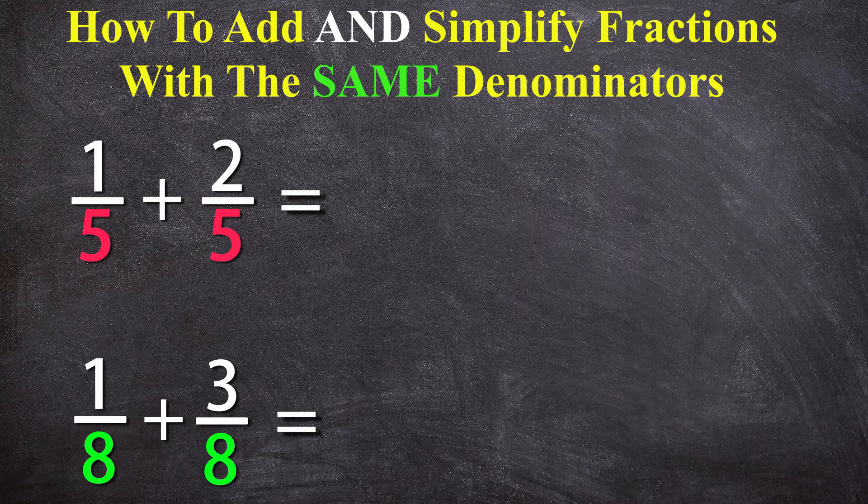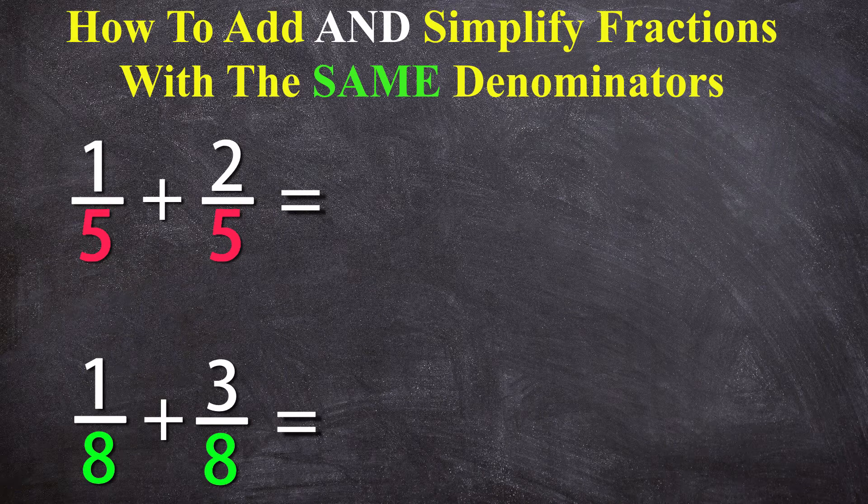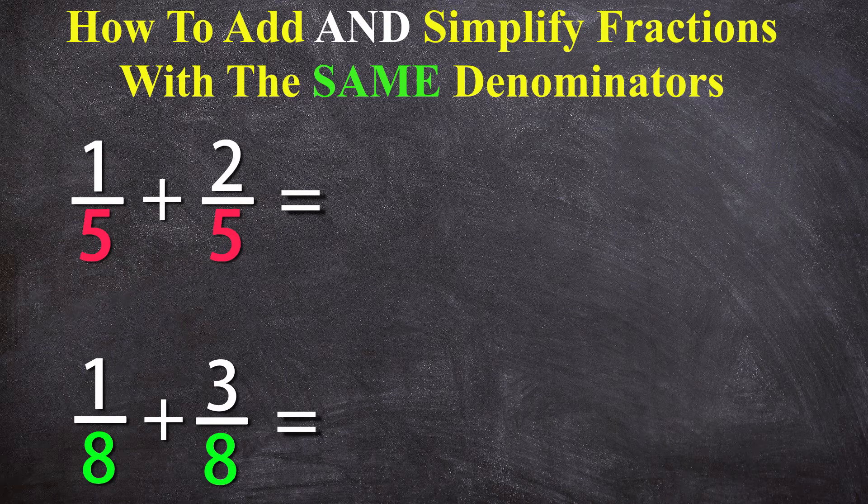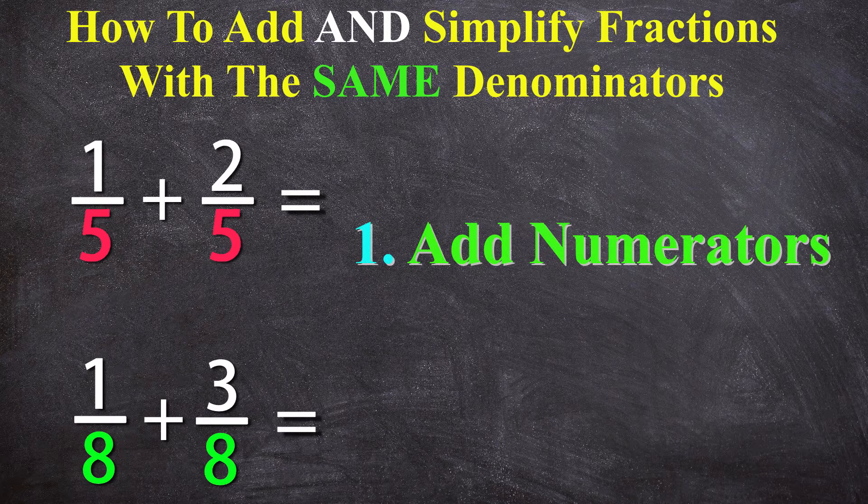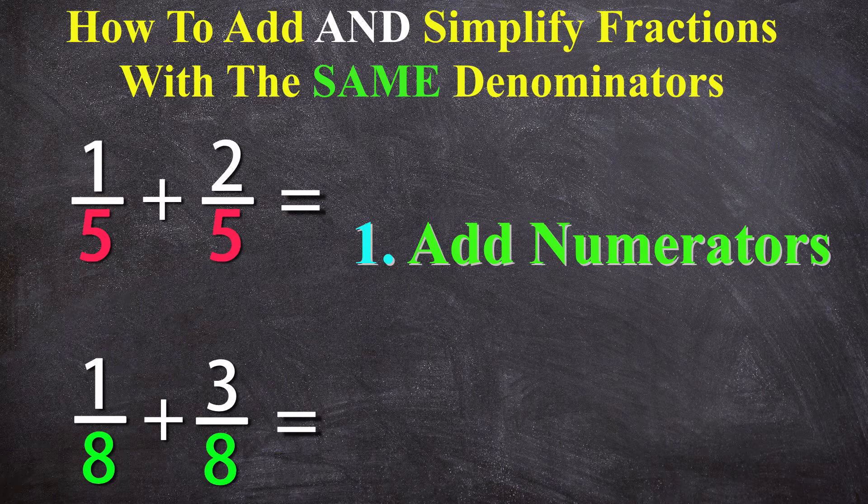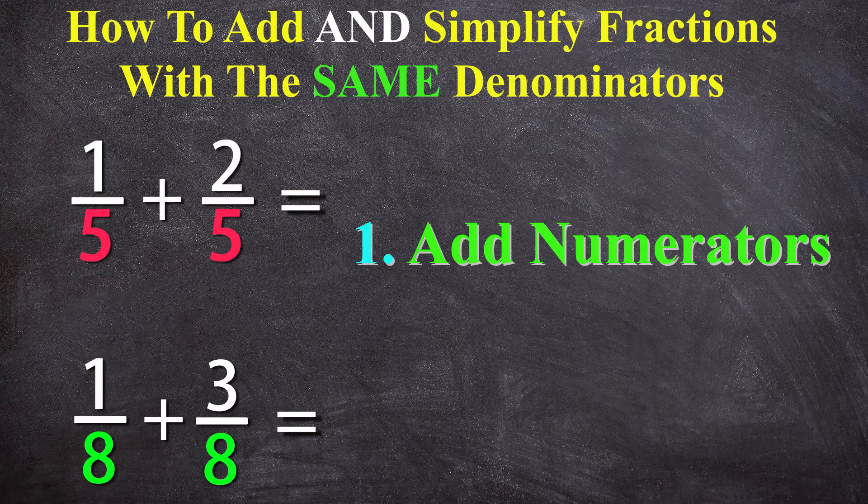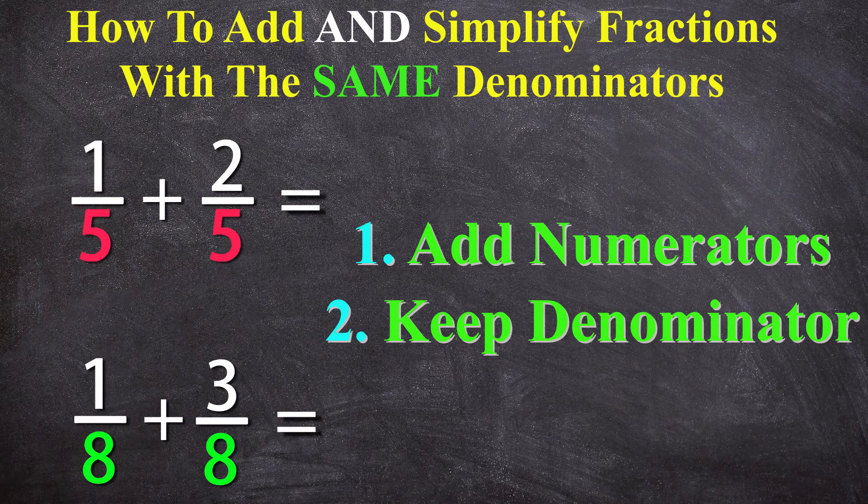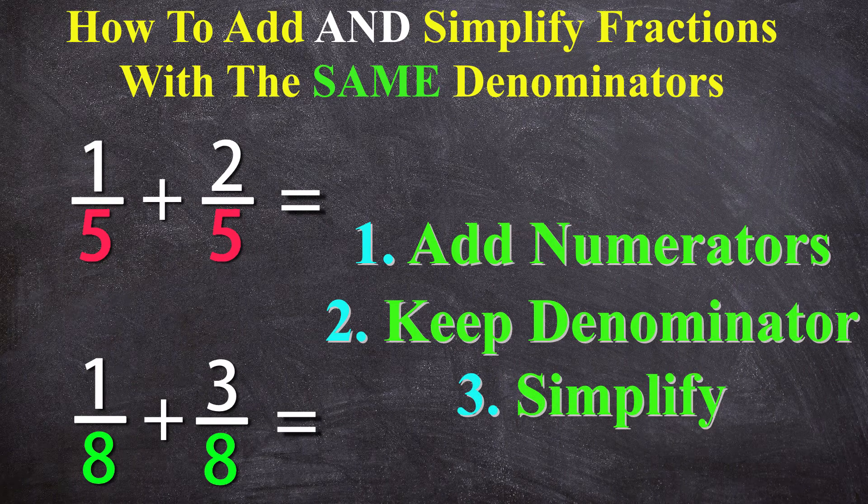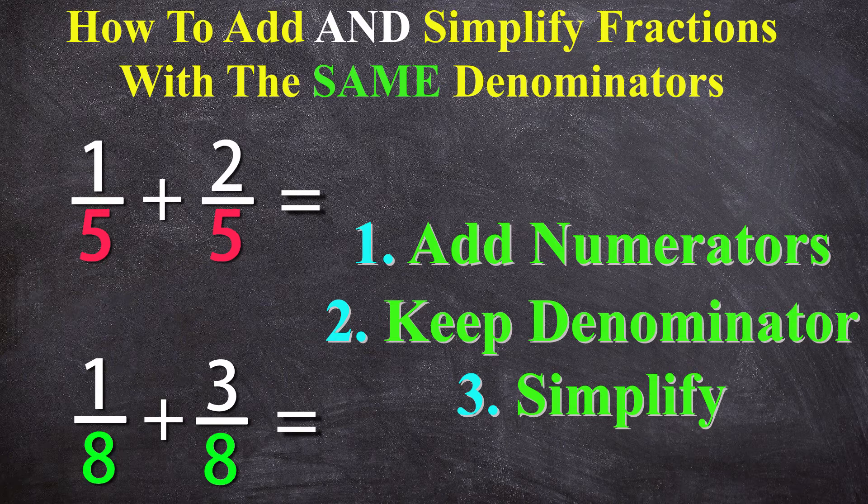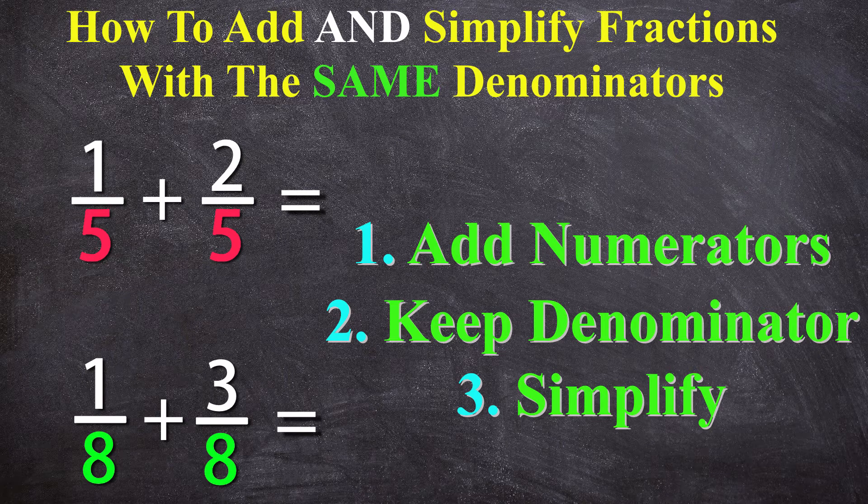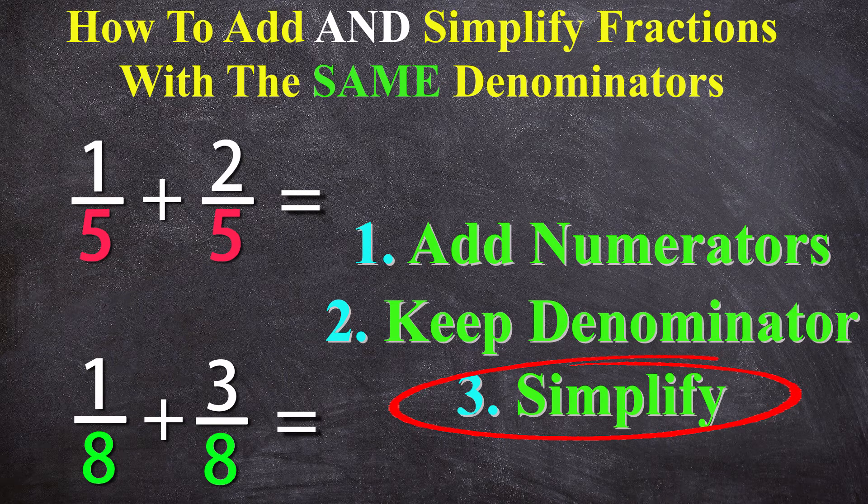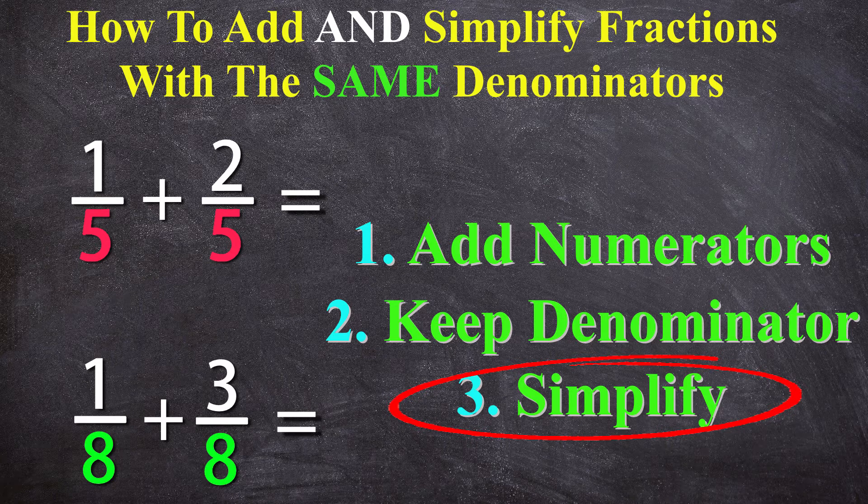There are three simple steps to adding similar fractions. The first two are very easy. In step one you add the numerators together, and in step two because the denominators are the same you keep the denominator. Then for step three you simplify the result. Now this step is a little bit harder but don't worry I'll show you how to do it. It's really important to simplify because you'll lose marks if you don't do this necessary step.